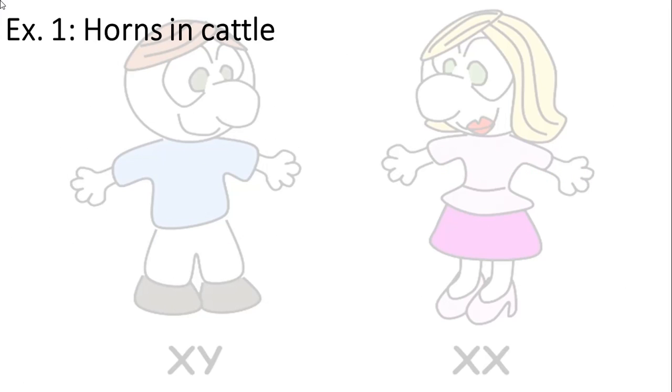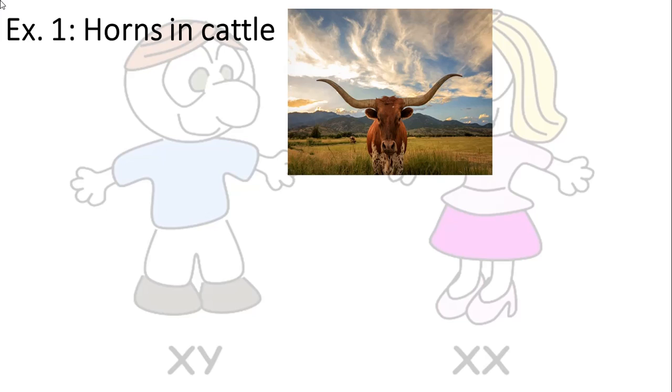We have two examples. The first example is horns in cattle. The ox has large horns, and some cows have horns too, but they are not as big as those of an ox. Calves are small cows or oxen and they don't have any horns, because they have to reach puberty for these traits to be expressed.